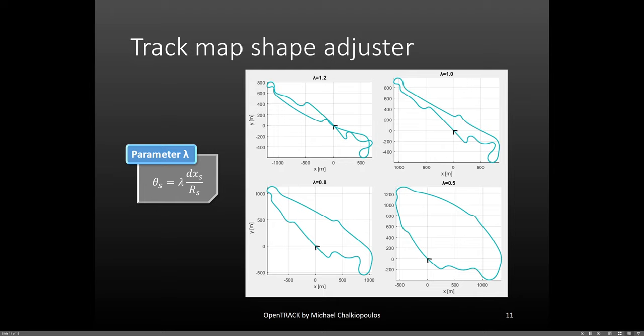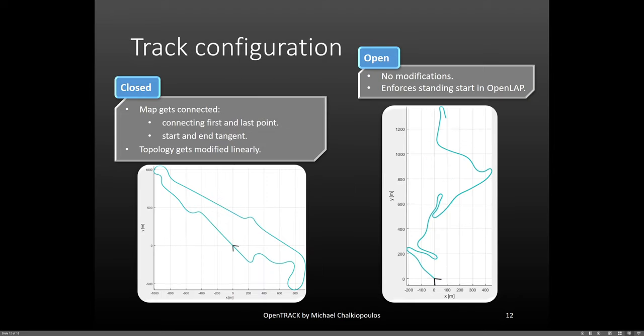This is because this is a closed map, so there is another correction on top of this that closes the loop. If this was an open track and you decreased lambda to zero, you would just get straight. Now we can talk about the two configurations.